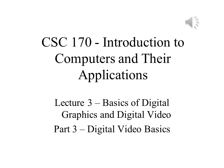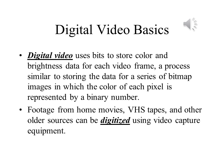In Part 3 of Lecture 3, we will take a look at the basic concepts of digital video. When we talk about digital video, what we mean is a moving image that is stored using ones and zeros to indicate the color and brightness of frames, which store both the images and sounds. The process of storing this information is very similar to storing the data for a series of bitmap images.